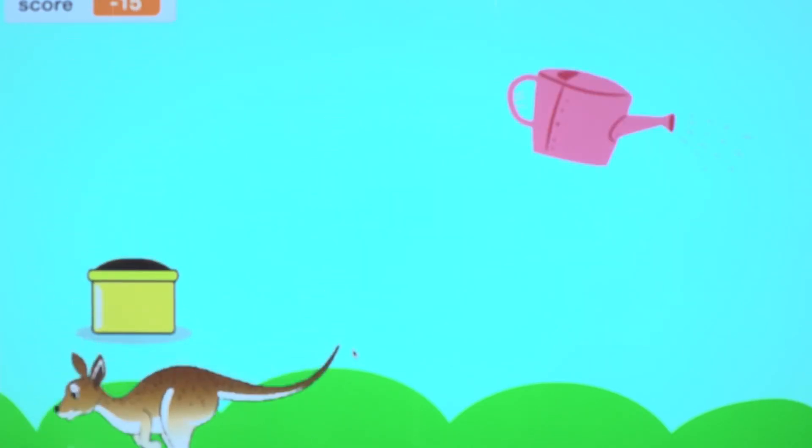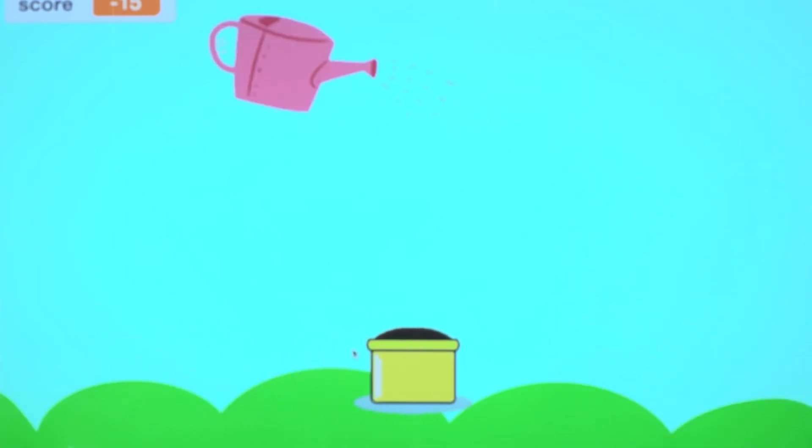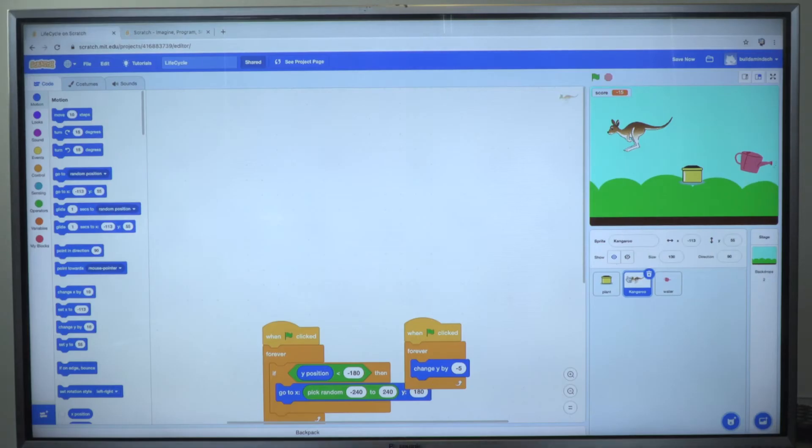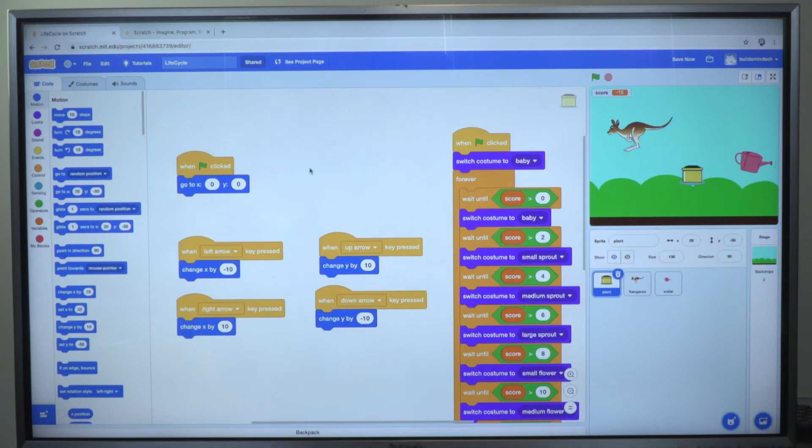However, if the plant is touched by the kangaroo, who's our enemy, he will lose a point. This is what our code looks like. Let's have a look at the inside of it.